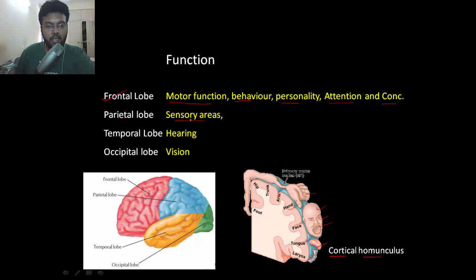Parietal lobe is for sensory areas, temporal lobe for hearing, and occipital lobe for vision. There are two important nuclei encountered during auditory and visual pathways: medial and lateral geniculate bodies. Medial for music, lateral for light - music in the auditory pathway, light in the visual pathway.